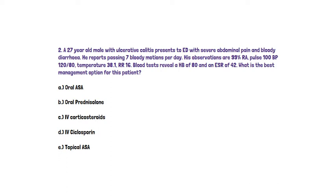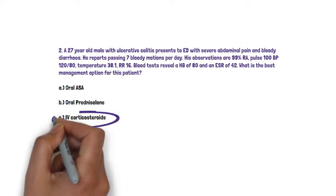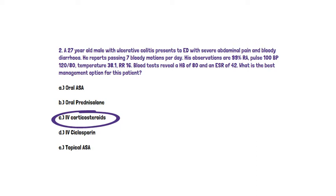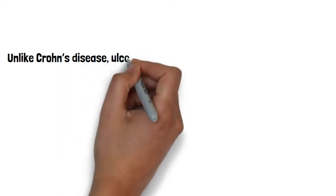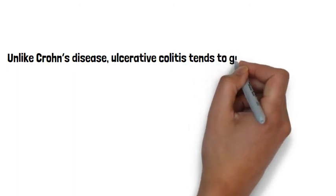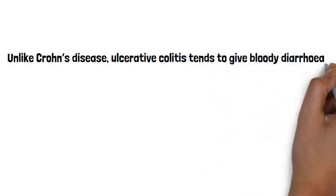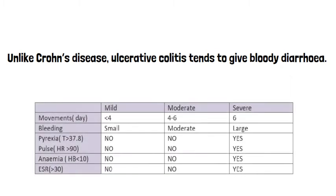The answer here is C. IV corticosteroids. This is a difficult question. It really concerns your knowledge of Truelove and Witts criteria, which is a classification used for ulcerative colitis. Unlike Crohn's disease, ulcerative colitis tends to give bloody diarrhoea. Truelove and Witts criteria divide ulcerative colitis into mild, moderate or severe using six different criteria. We see that this patient has greater than six bowel motions, a temperature, tachycardia, is anaemic, and has a high ESR — all features pointing towards a severe presentation.